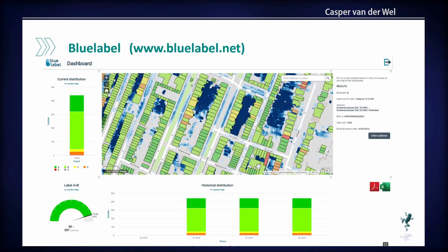Another example is Blue Label — an entirely different example which uses vectors. The city of Rotterdam wanted, for each building, a label indicating how risky it is for floods. If there's a peak rainfall, they want to know the risk of flooding. Based on the outcome of the hydrological model, you can take the maximum water level around the building across all scenarios and assign a label to it. This is also done with Geoblocks, and it shows that it also works with vector data.